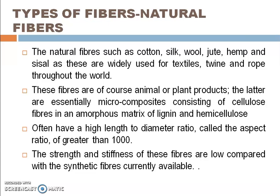Natural fibers such as cotton, silk, and wool are widely used for textiles. These fibers have a high length-to-diameter ratio, greater than 1000, which is why they are very important. However, the strength and stiffness of natural fibers are low compared to synthetic fibers — that is one of the major disadvantages of natural fibers.